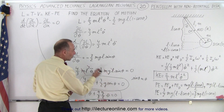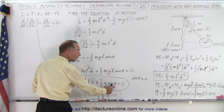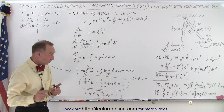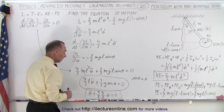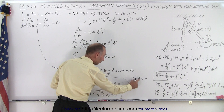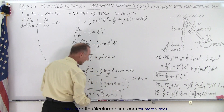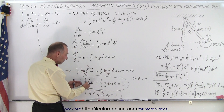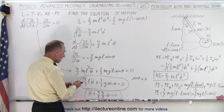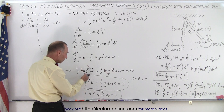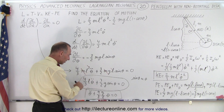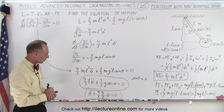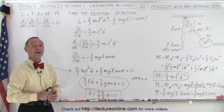For large oscillations we need to keep the sine theta term, making the equation harder to solve. But for small oscillations where sin theta ≈ theta in radians, we replace sin theta with theta, divide both sides by L, and multiply by 3/4. The final simplified form is θ̈ + (9/8)(g/L) theta = 0.